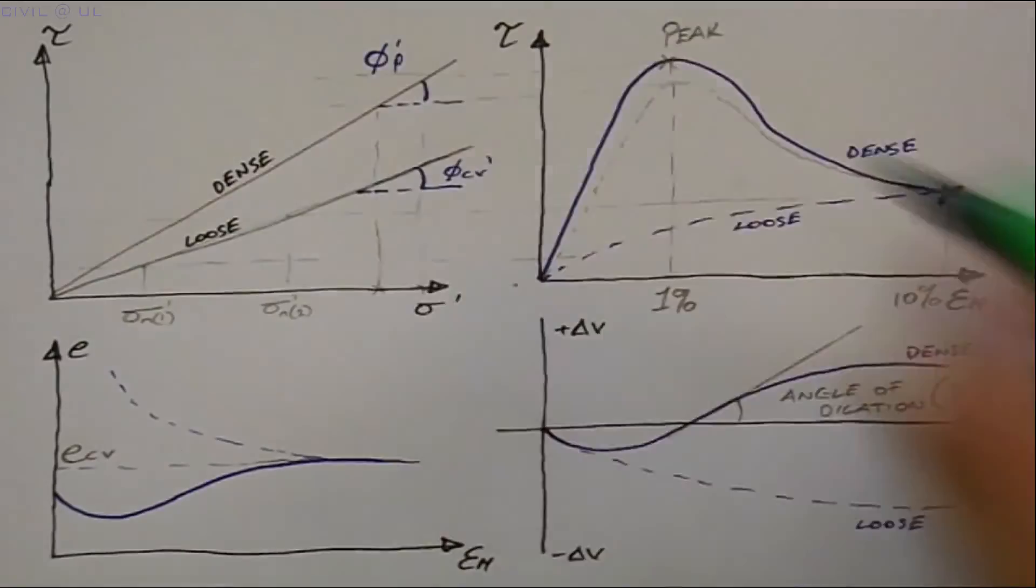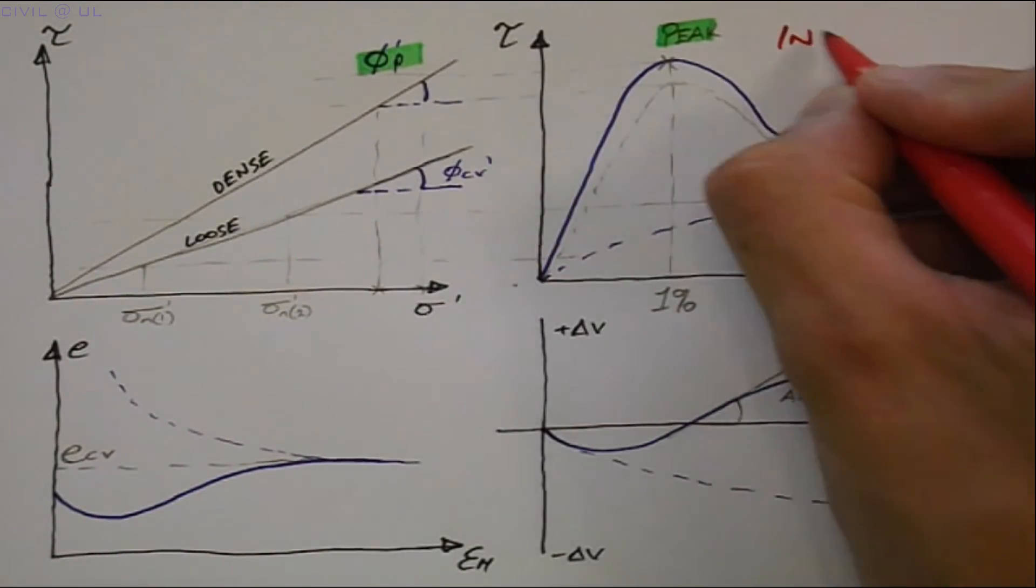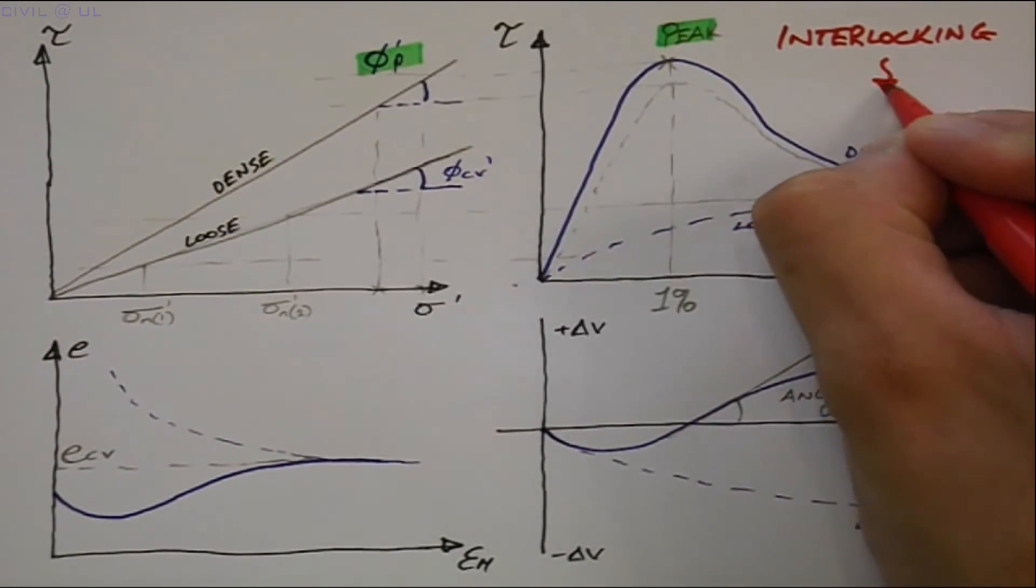So, how do we explain the peak angle of friction? Well, this can be considered as the contribution to strength due to interlocking between the grains, and therefore can be characterized as a state property, since its contribution is related to the initial voids ratio.